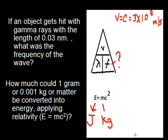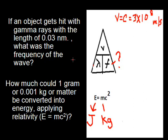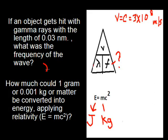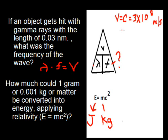So here's a couple of problems using the speed of light to complete our calculations. If we have an object that gets hit with gamma rays with the length of 0.03 nanometers, what is the frequency of the wave? The equation we use for finding out the frequency would be lambda, which is your wavelength times your frequency, and that's equal to the velocity of the wave. But of course, the gamma ray travels at the speed of light.